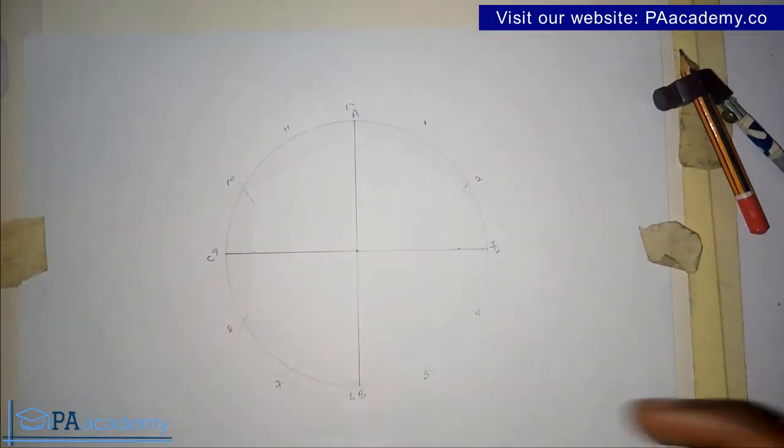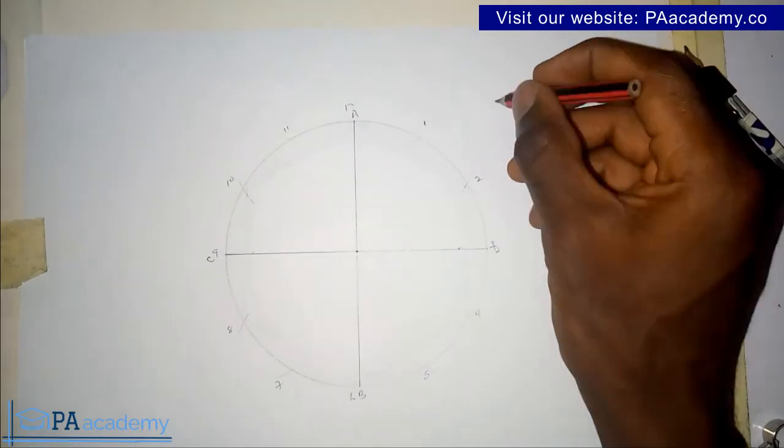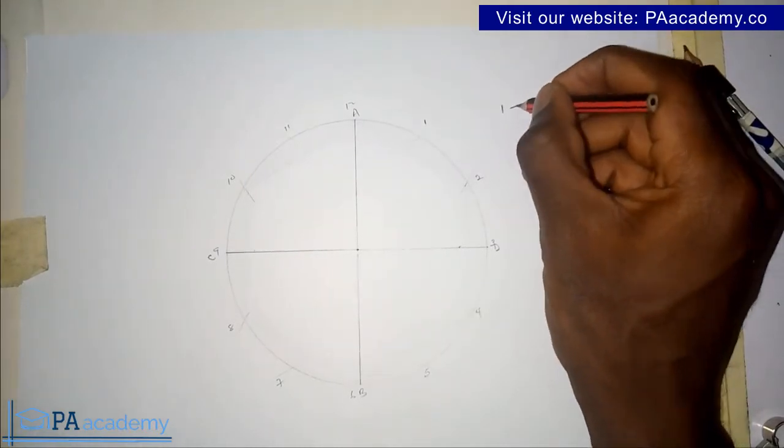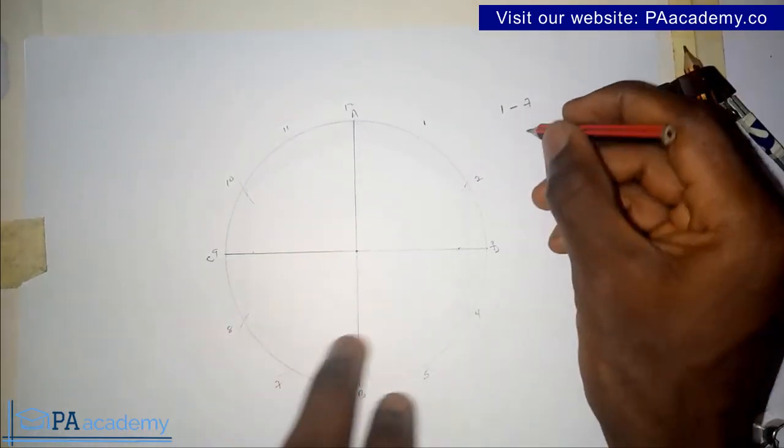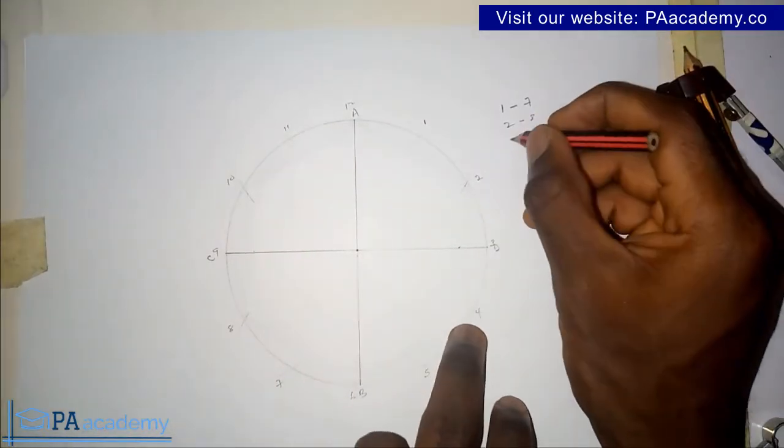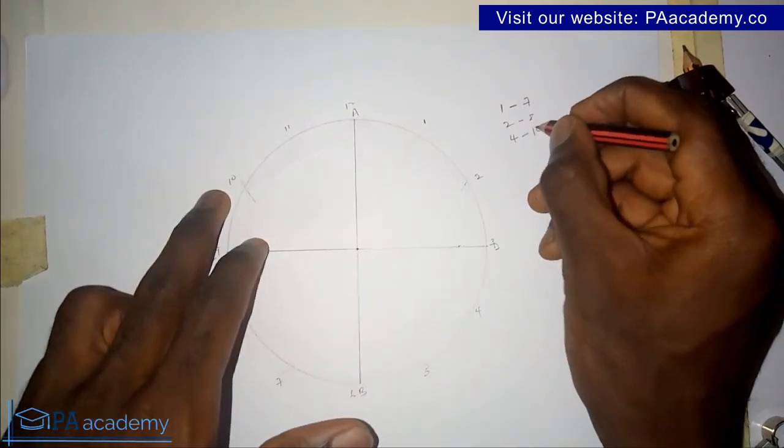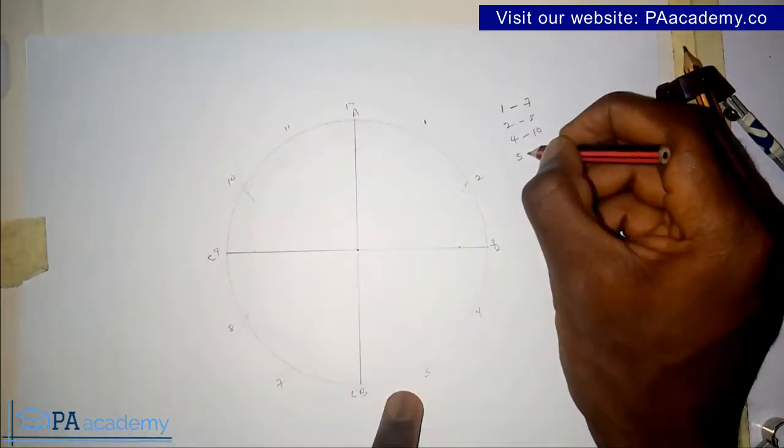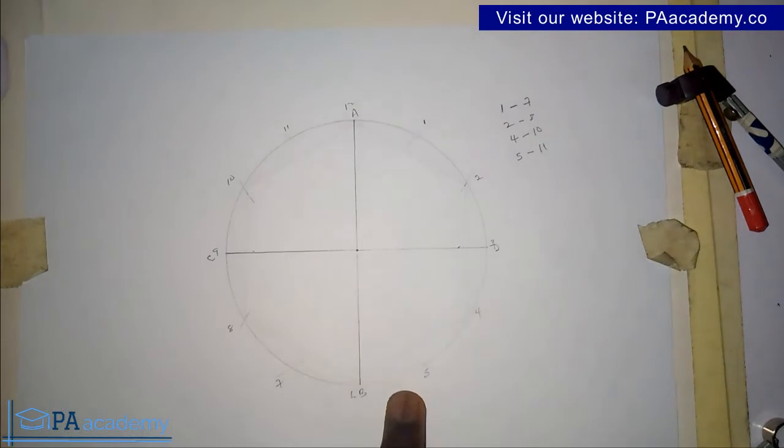What we want to do is draw a line from point one to point seven, from point two to point eight, from point four to point ten, from point five to point eleven.